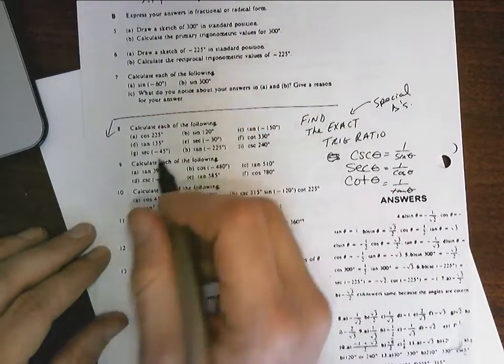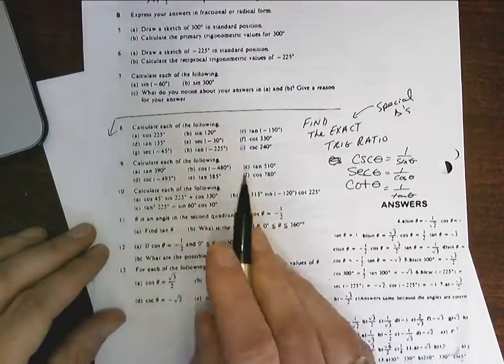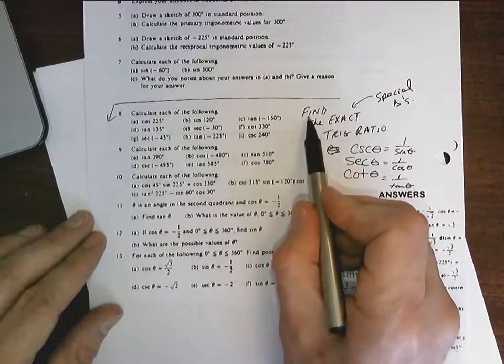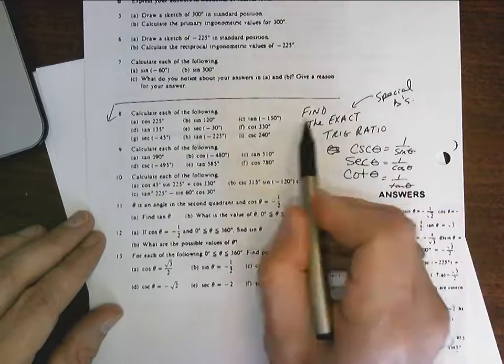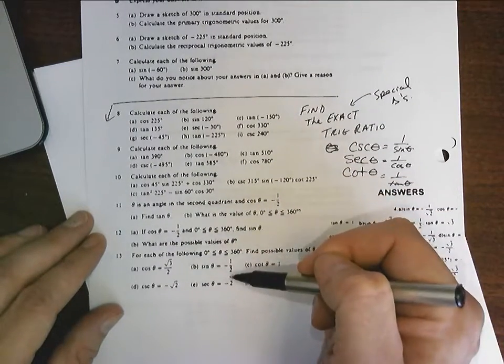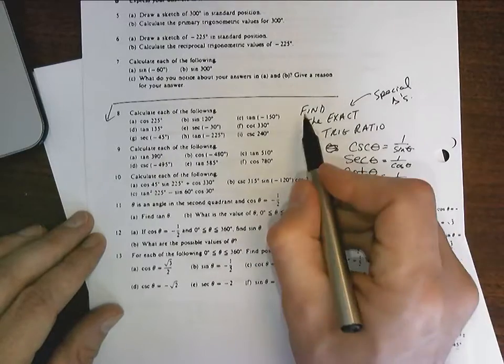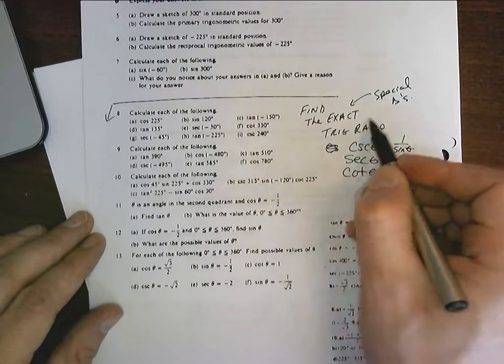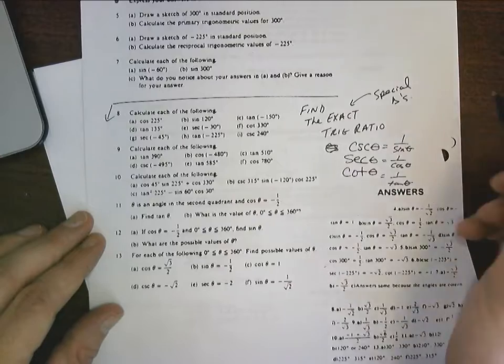you went through and did this and just put these values into your calculator. That's not what we need to do. I want you to find the exact trig ratio for each one of these. We took these up in class. These are great questions. If you can do this, you can do anything. Find the exact trig ratio. That means that you're going to be using special triangles. I took some up in class.